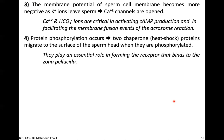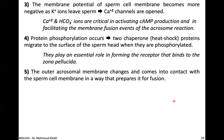The fourth mechanism is protein phosphorylation occurring on two chaperone proteins — a type of heat shock protein. These chaperone proteins migrate to the surface of the sperm head when phosphorylated, playing an essential role in forming the receptor that binds to the zona pellucida. The fifth mechanism involves the outer acrosomal membrane changing and coming into contact with the sperm cell membrane in a way that prepares it for fusion.